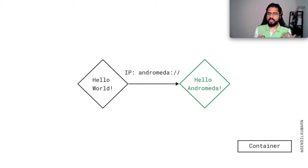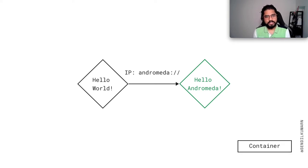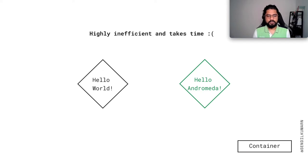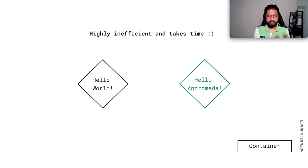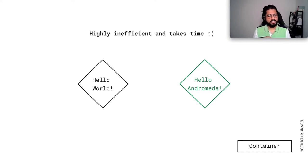If Hello World wants to talk with Hello Andromeda, you have to know the IP address of Hello Andromeda. You issue a request to it and Andromeda gives a response, which you serve back to your customers. But doing this manually is very inefficient. If for any reason the IP address of Hello Andromeda changes, you have to undeploy Hello World and redeploy it with a new update. In microservices, you want to isolate these services completely and pull them apart so there is no tight interconnection between them.